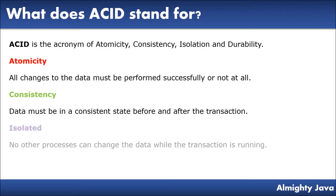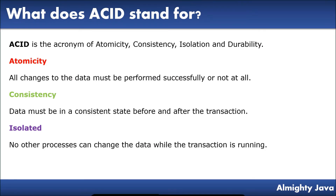Isolation: no other processes can change the data while the transaction is running. During the execution of one transaction, if a user tries to start another transaction, then it must wait until the first one finishes completely.